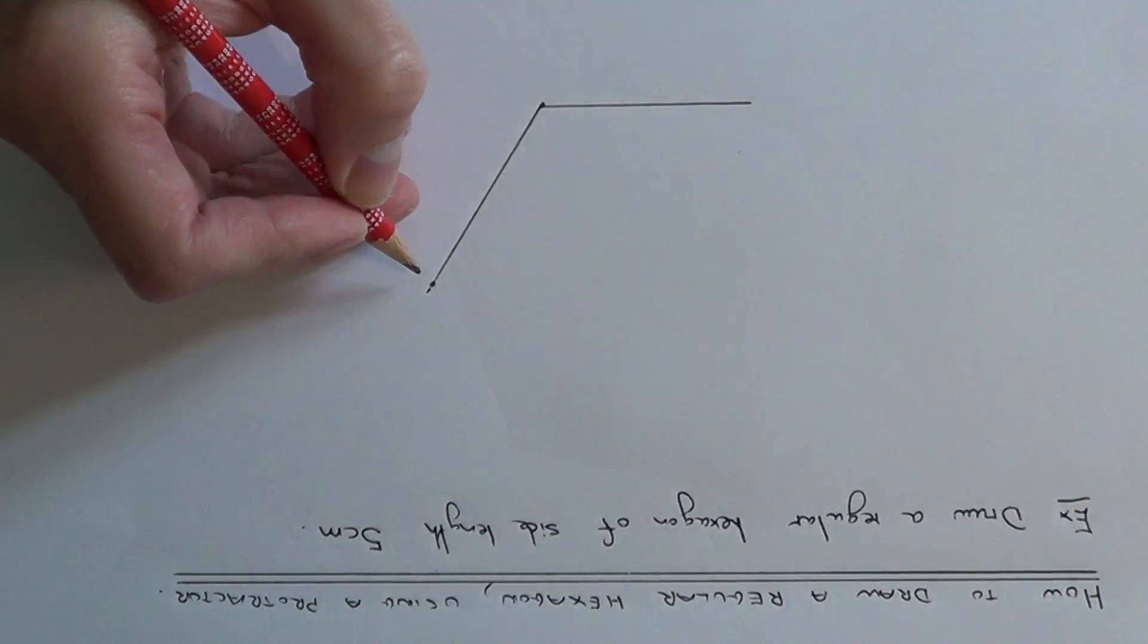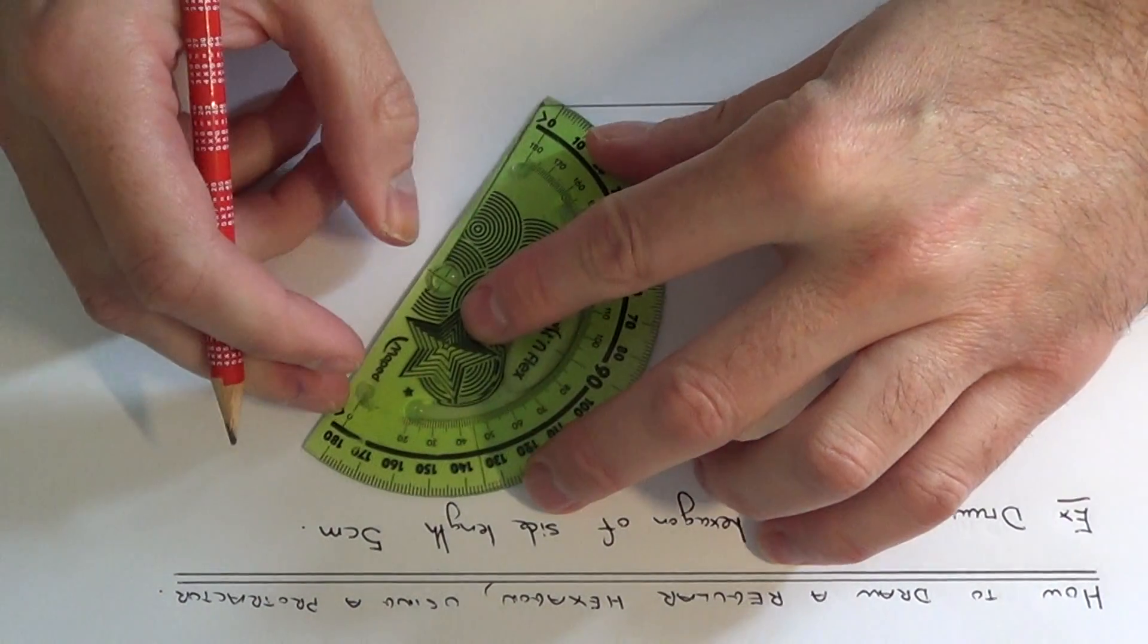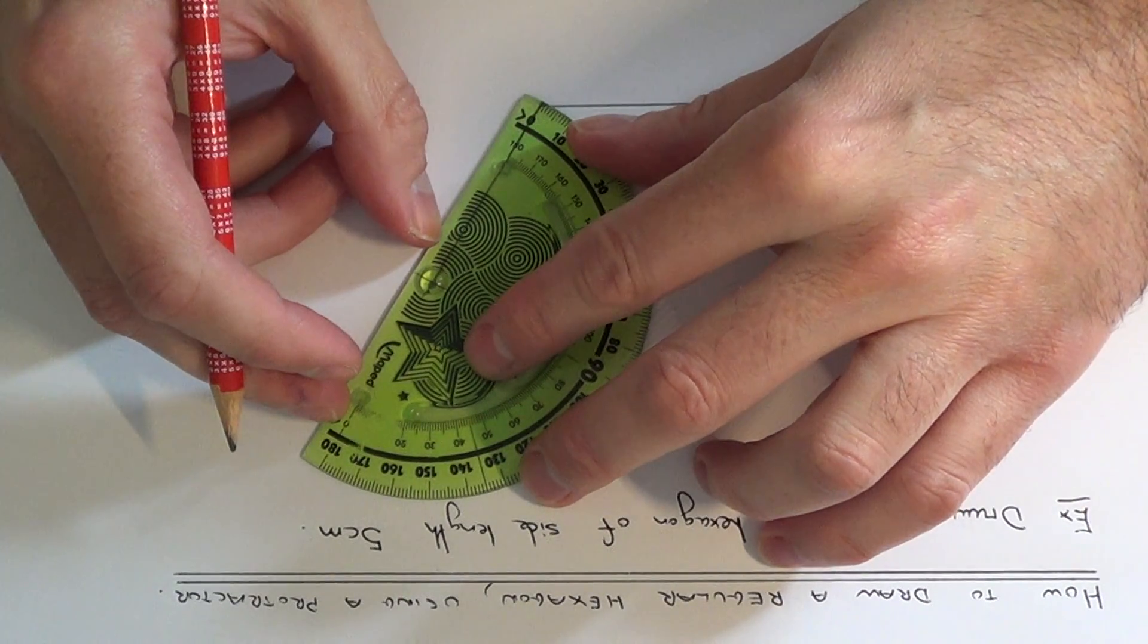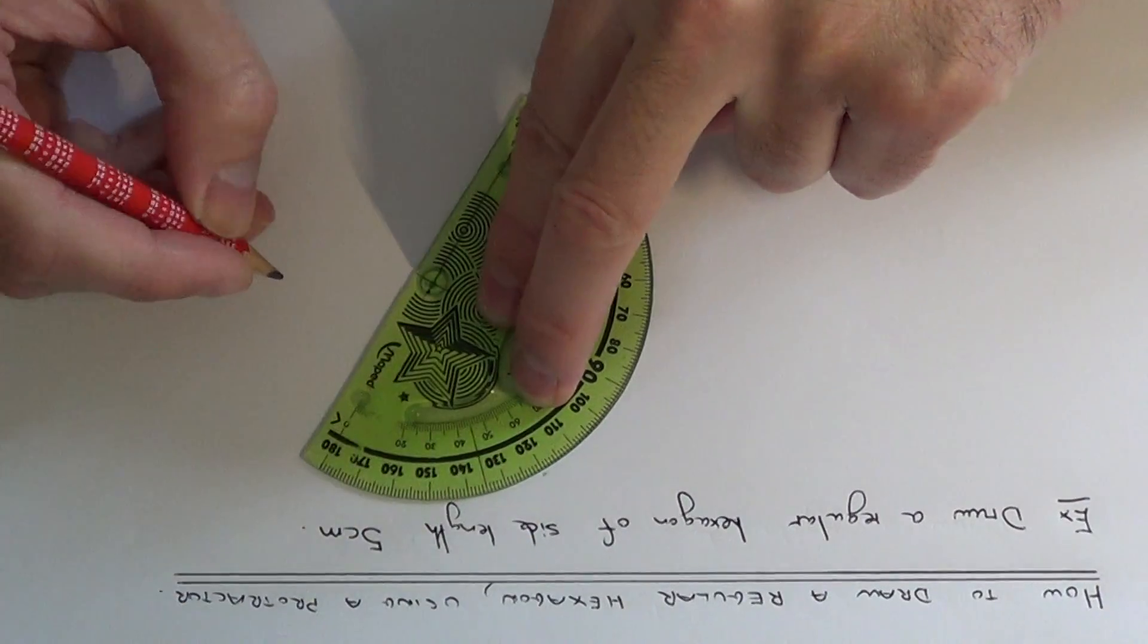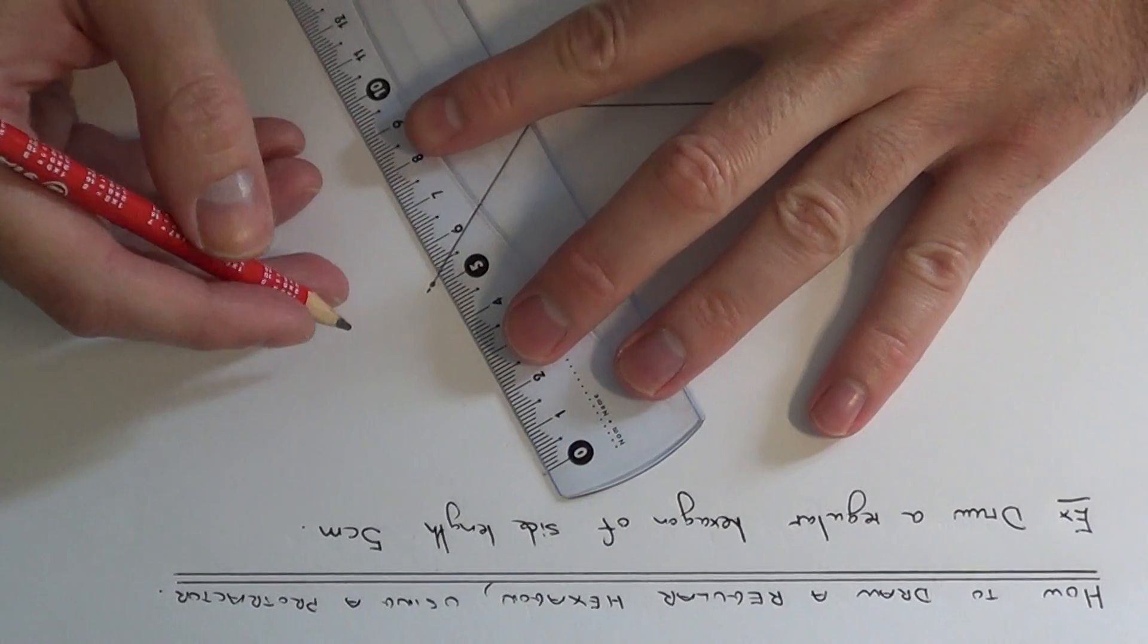We just need to repeat what we've just done. If we measure another angle of 120 degrees from the end of the line, put a little dot there, and again make sure it's 5cm long.